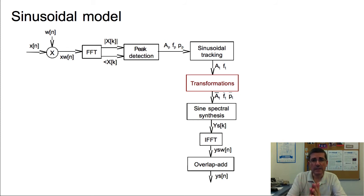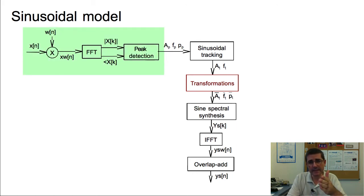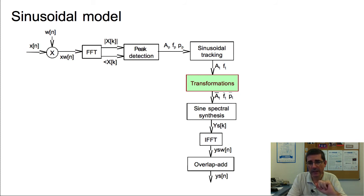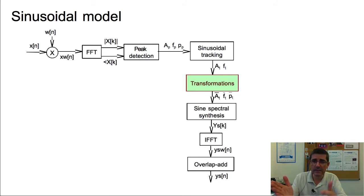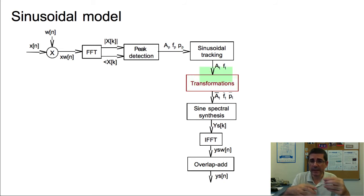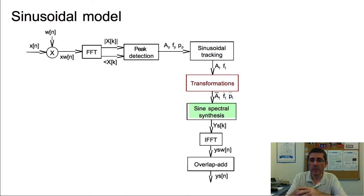Now let's go to the sinusoidal model. We have the analysis with peak detection and sinusoidal tracking, and now we will be modifying the resulting sinusoidal values. There is one important change: we are not going to use the original phase values, because phase values are very sensitive and difficult to handle during transformations. Instead, we regenerate the phase values from the frequency values. We modify amplitude and frequencies, then generate the phase values after the transformations, which serve as input for the same synthesis we have been doing.